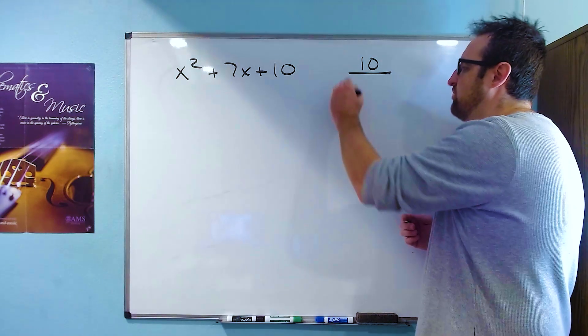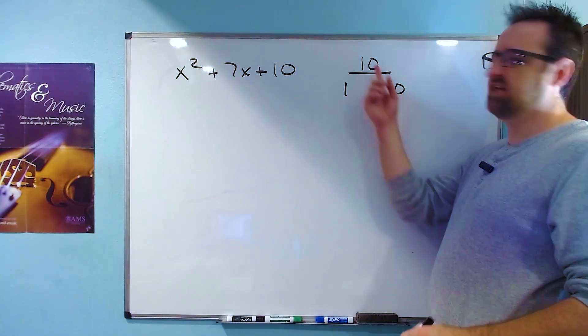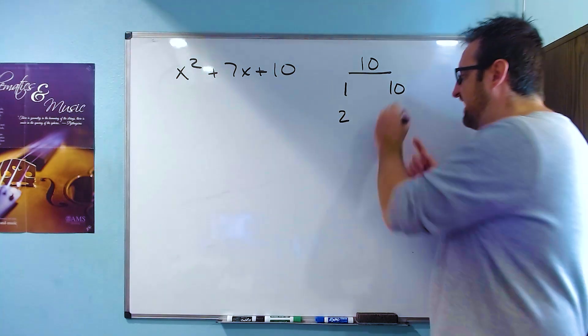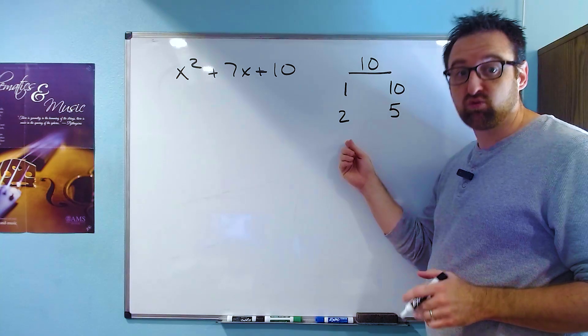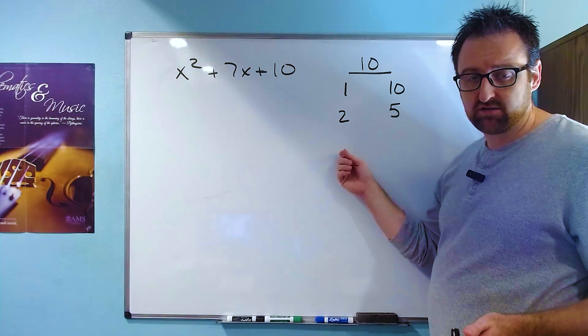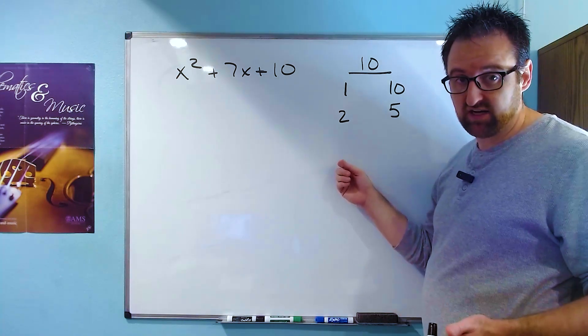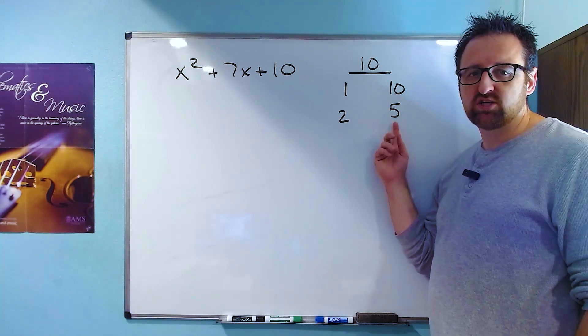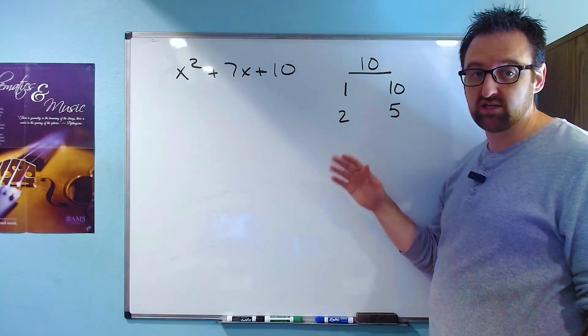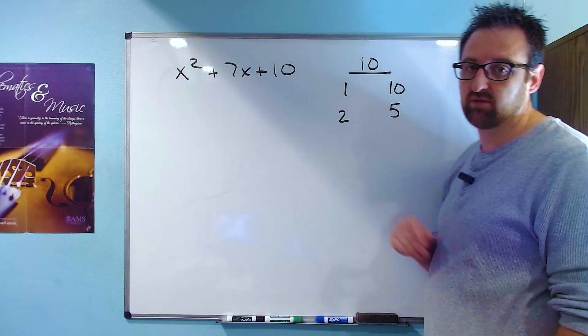Now we need to write down every possible pair of factors that multiply to 10 and we do that by counting. So we've got a 1 here and a 10 because 1 times 10 produces 10. Then we go up to 2. 2 times 5 gives us 10. Then we could look at 3. 3 is not a factor because 10 divided by 3 doesn't divide evenly. 4 is not a factor because 10 divided by 4 doesn't divide evenly. 5 would be the next number we checked, but it's already listed. And as soon as you get to a number that's already listed, you're done. You have all the possible factors that multiply to 10.